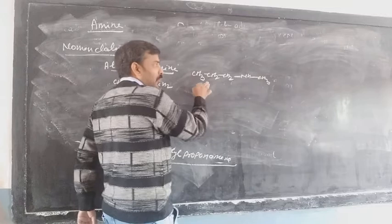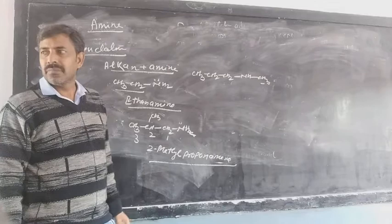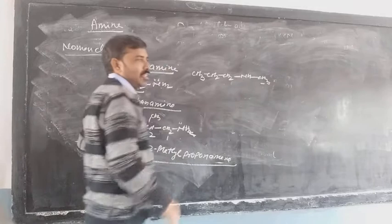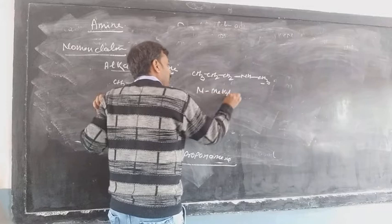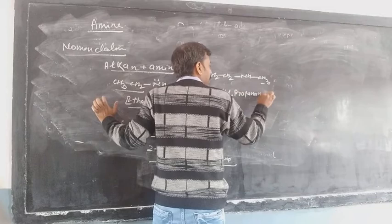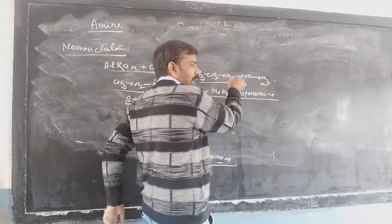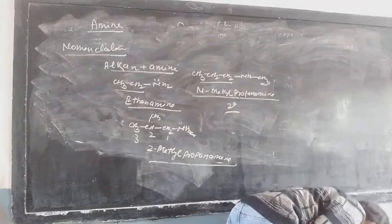But in this case, the methyl group is not attached on the carbon chain — it is attached on the nitrogen. So the name uses N-prefix: it is N-methylpropanamine. And what type of amine is it? There is one alkyl group on carbon and another on nitrogen — two alkyl groups — so it is secondary.